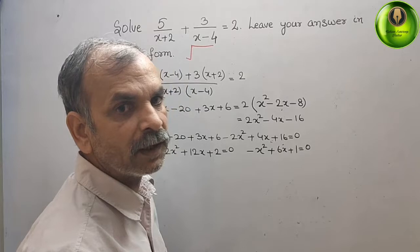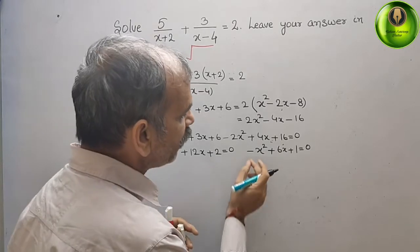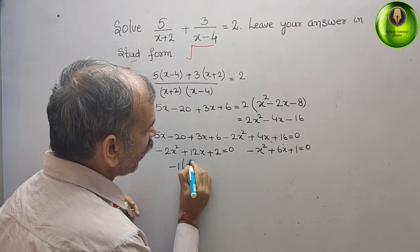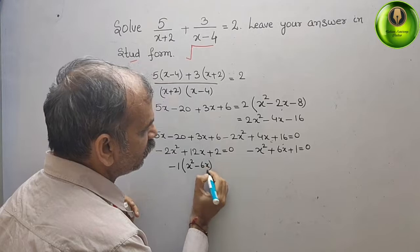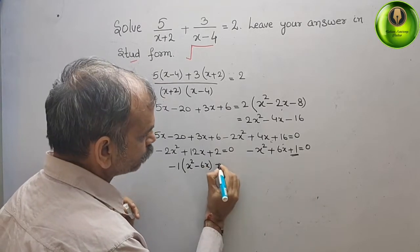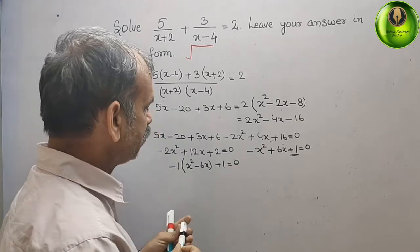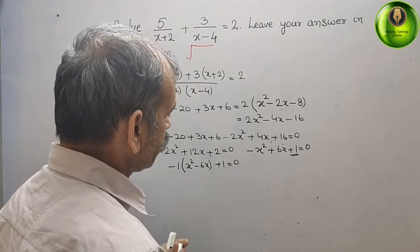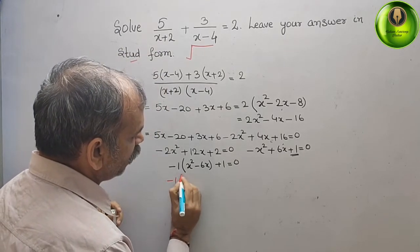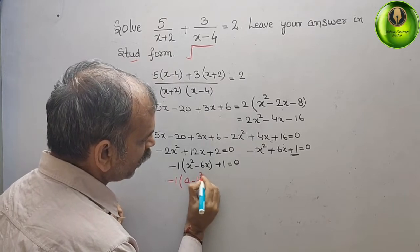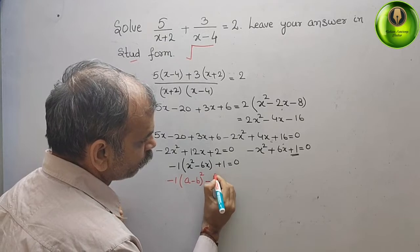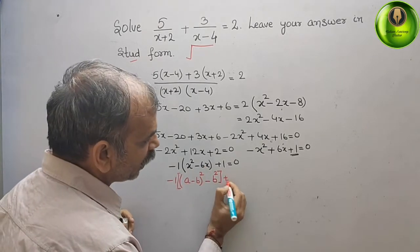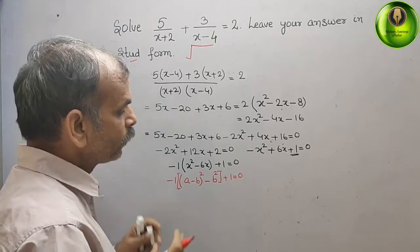Now we will use the completing the square method. Take -1 as common: -1(x² - 6x) + 1 = 0. Since there is a minus sign, we use the form -(a - b)² + b² + 1 = 0.